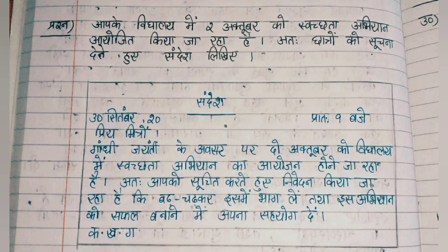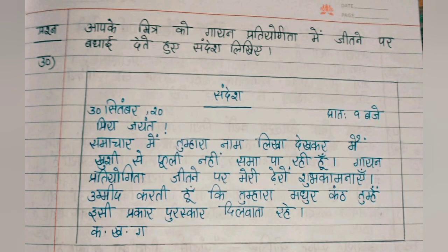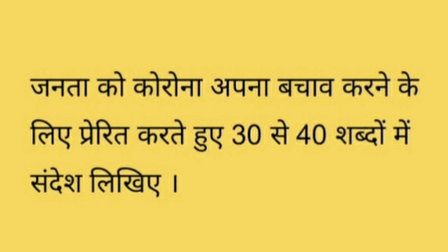Whatever name has been given — like K, Kh, G — you must write that name. This completes the small Sandesh. Next, let's look at the next Sandesh. The next question is: write a congratulatory message to your friend for winning a singing competition. I have written: Priya Jayant — since it is your friend, write Priya Mitra. Hearing your name in the news of winning the singing competition, I am overjoyed. Heartiest congratulations on winning the singing competition. I hope your sweet voice keeps winning you such awards.